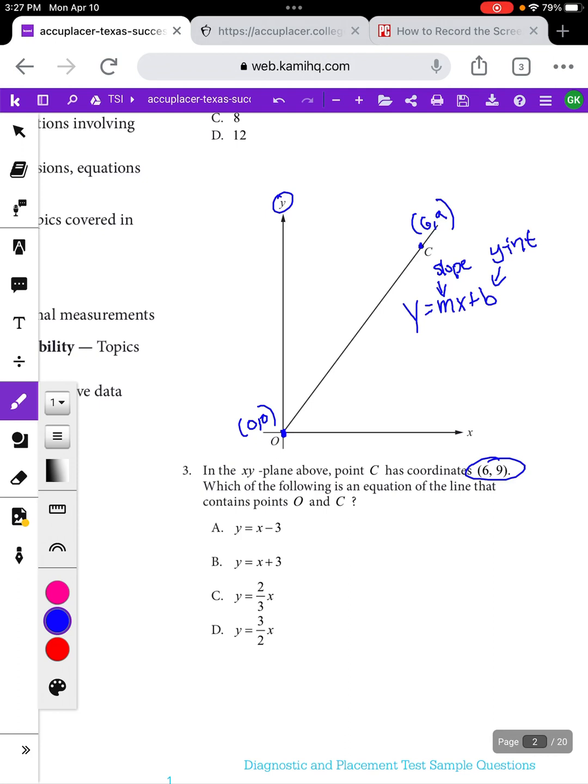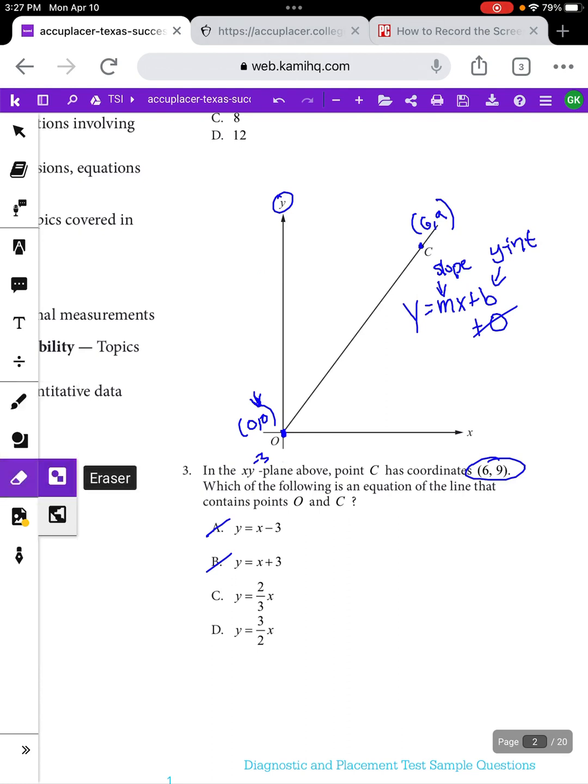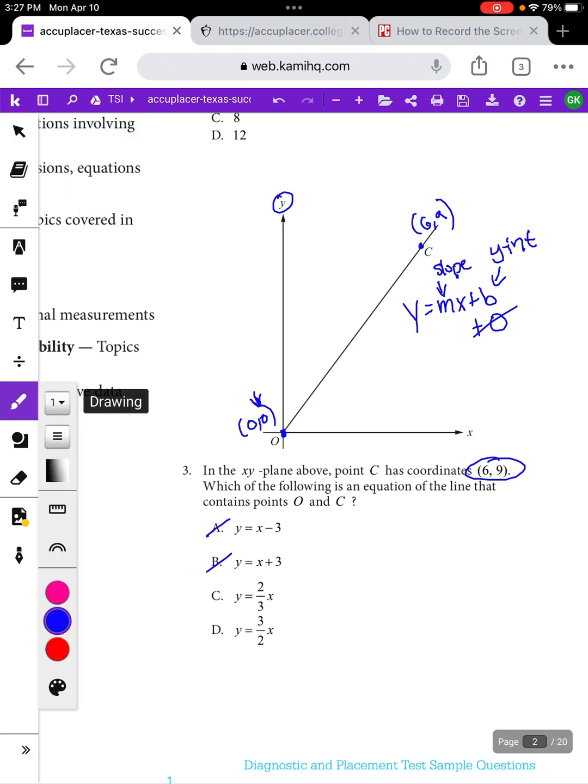First thing you can do is look at this picture of a graph that they give you and look at the y axis, because part of our equation is having the y intercept. If you follow this y axis down until you get to where your line intersects it, the only point at which this line touches the y axis is at the origin, which has a y value of 0. So we need an equation that has plus 0 at the end. If you notice though, none of our answer choices include a plus 0 because we typically don't write plus 0 at all. But if we were going to have plus or minus anything, it would be 0. So it can't be A or B because they have minus 3 and plus 3. Since we don't have either of those things on our line, neither of those choices can be the correct answer.